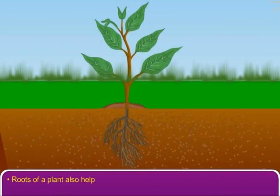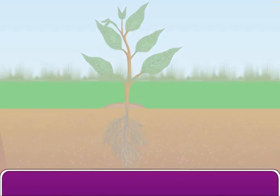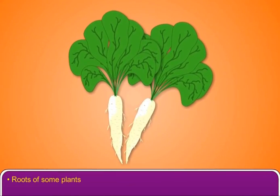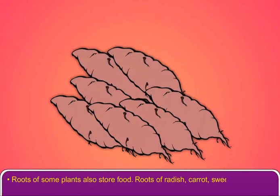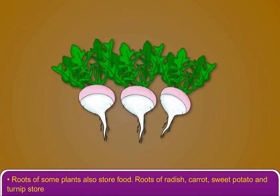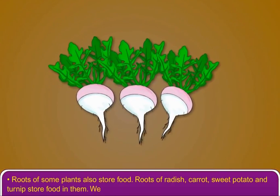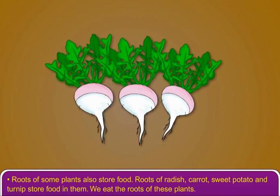Roots of a plant also help it to fix in the soil. Roots of some plants also store food. Roots of radish, carrot, sweet potato and turnip store food in them. We eat the roots of these plants.